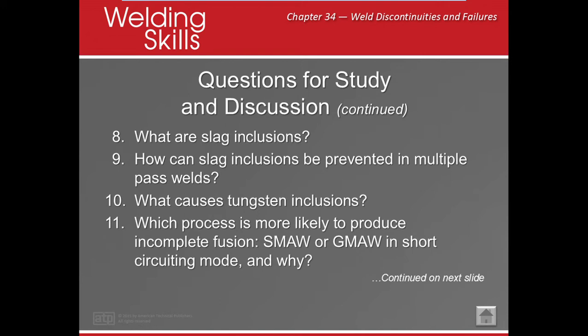What causes tungsten inclusions? There are a couple of different things: the tungsten can drop off into the weld, or sometimes we touch it and it leaves a little piece in there. If we improperly grind it, a little bit can go in there. If we're using a tungsten that's too small and putting too much current through it, that can happen as well.